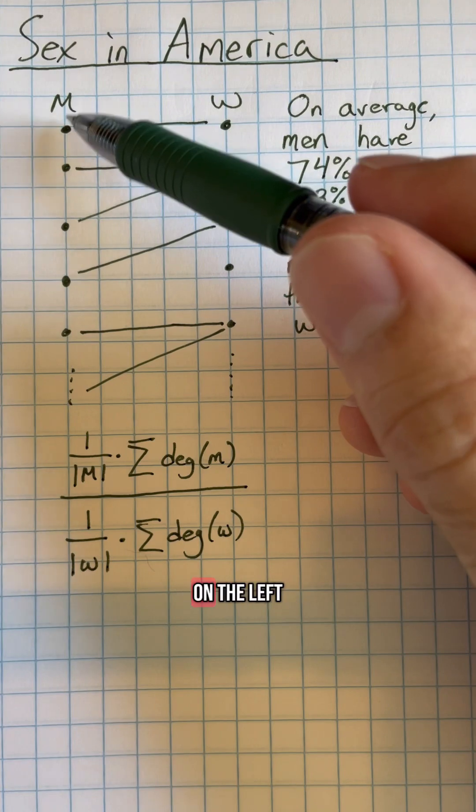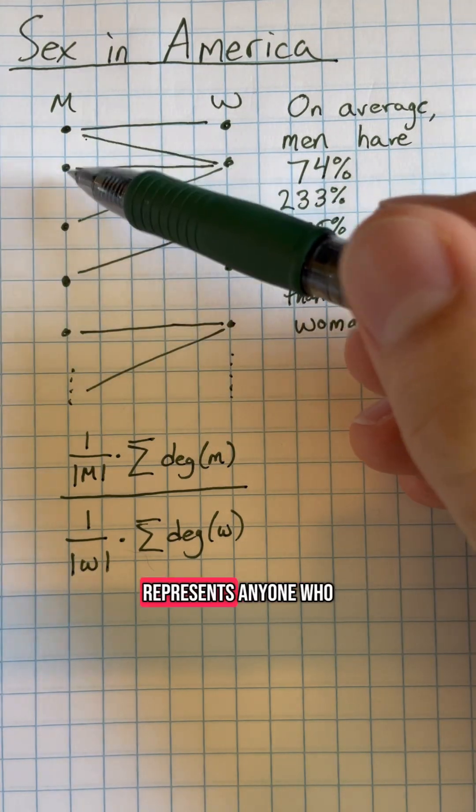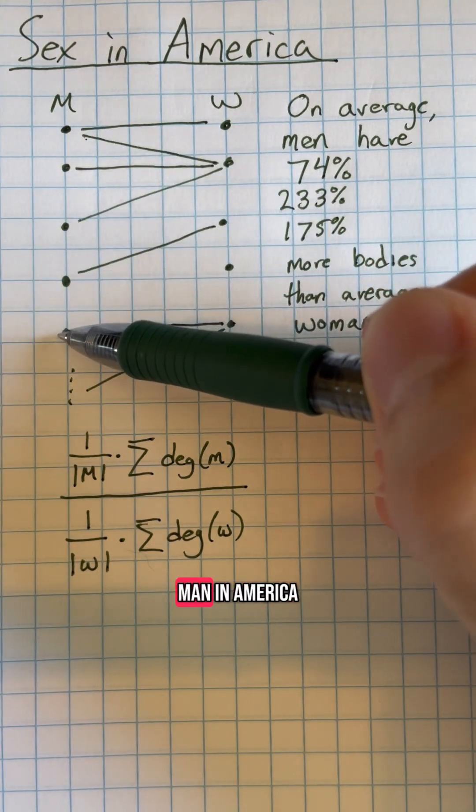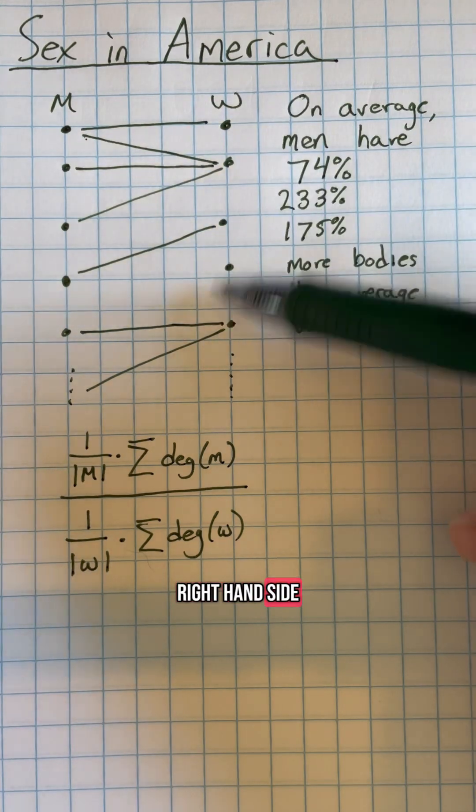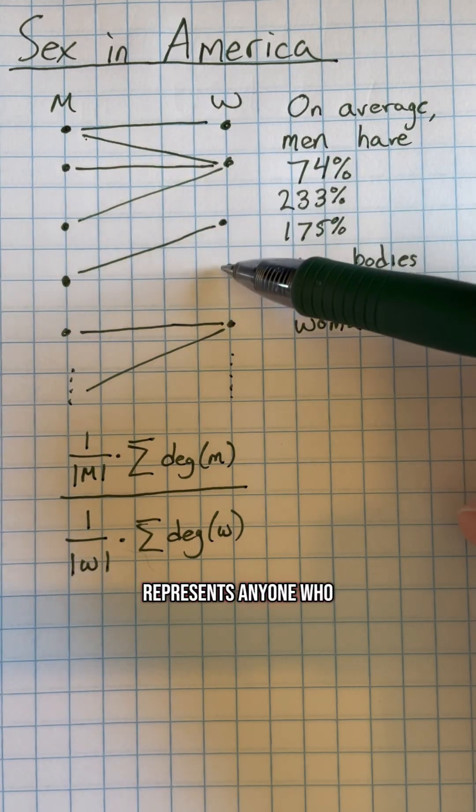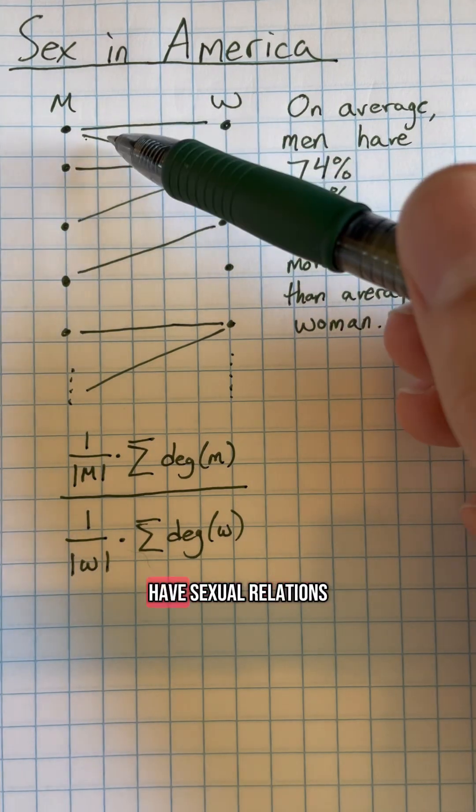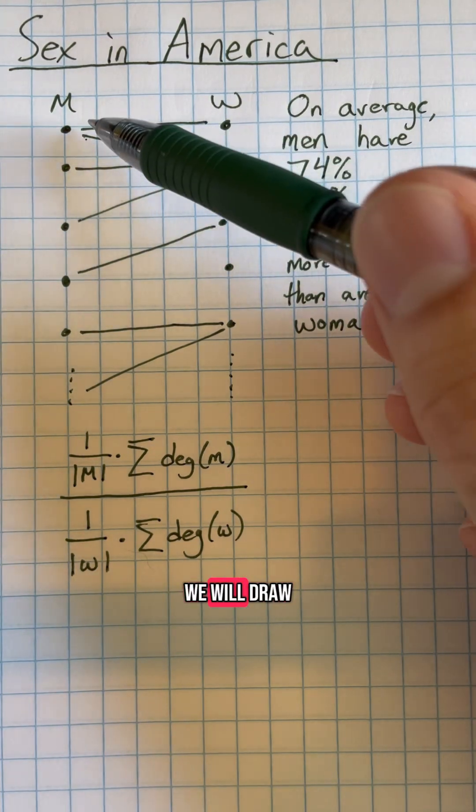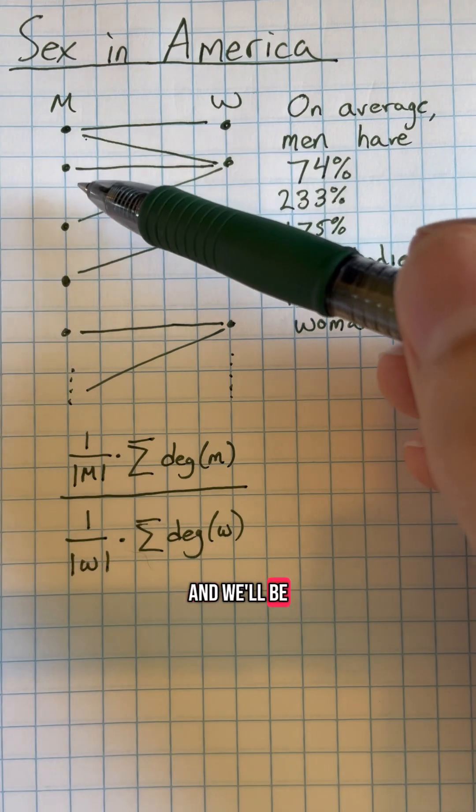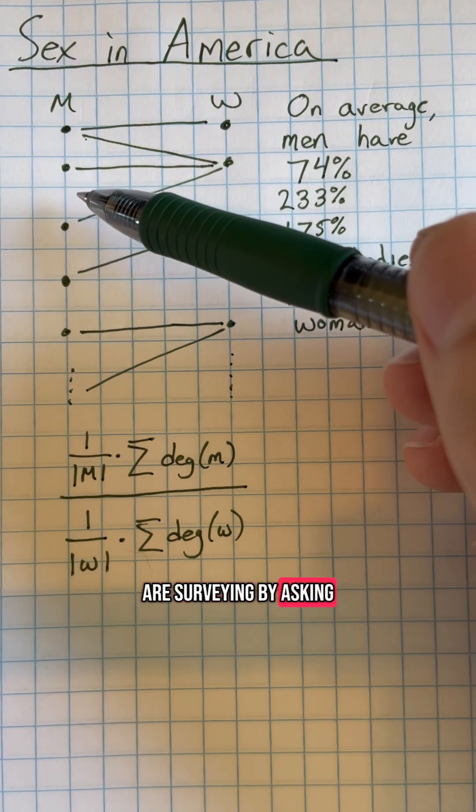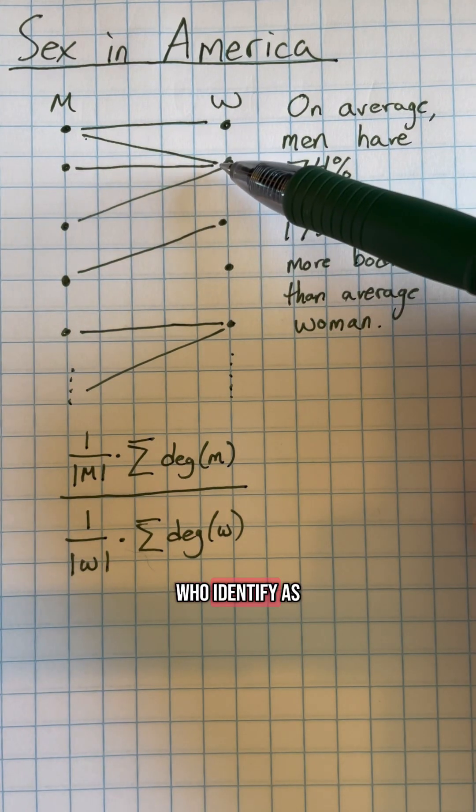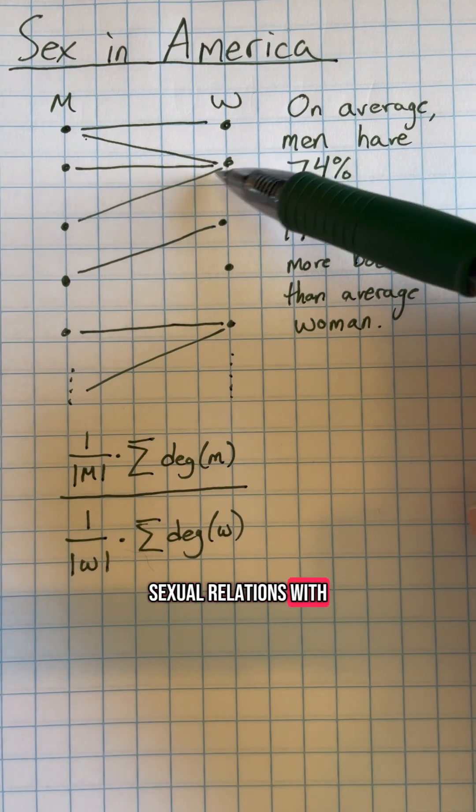Let's consider a graph in which, on the left-hand side, we have a dot representing anyone who identifies as a man in America, and on the right-hand side, a dot representing anyone who identifies as a woman. If two people have sexual relations with each other, we draw a line connecting them. We survey by asking how many people who identify as the opposite gender have you had sexual relations with.